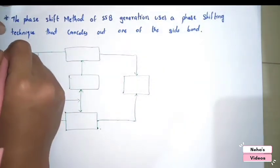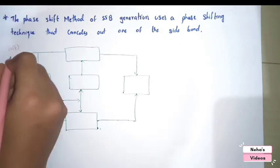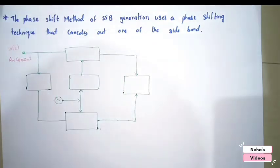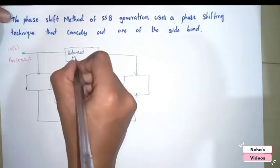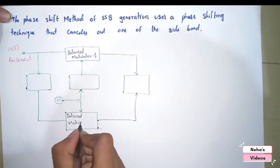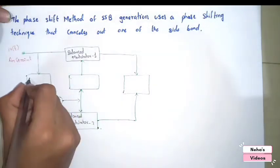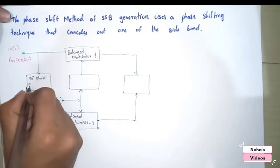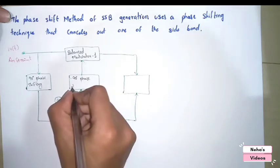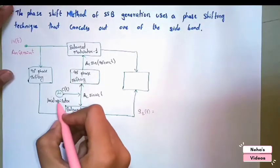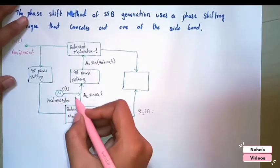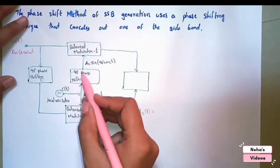We give message signal m(t) = Am·sin(ωm·t) to the first balanced modulator and to the second balanced modulator. This is a 90-degree phase shifting network, and this is also a 90-degree phase shifting network. The local oscillator generates the carrier signal c(t), and it goes to both the second modulator and the 90-degree phase shifting network.